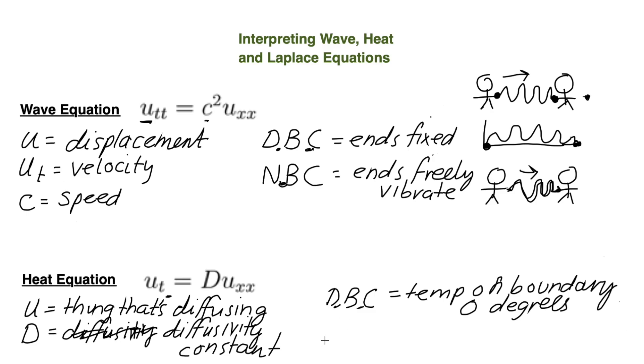And the Neumann boundary condition, this is specifying the flow of heat or whatever U is, the flow of it across the boundary.